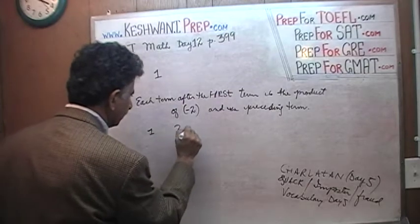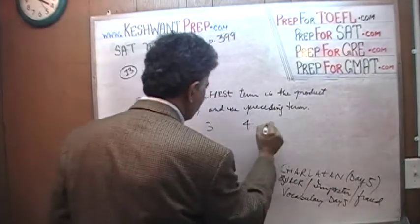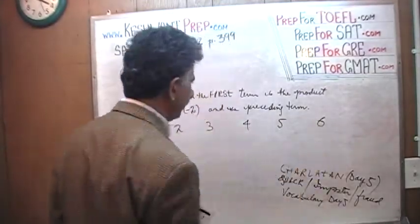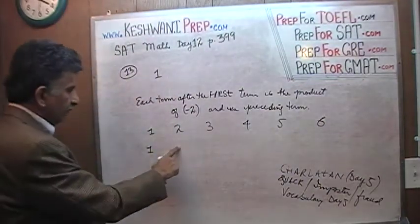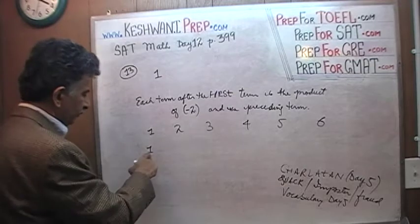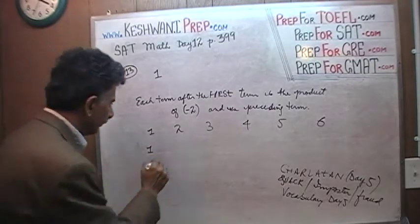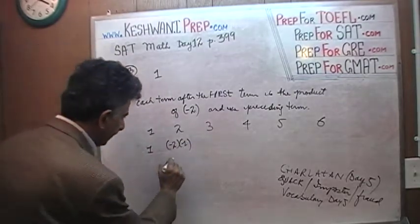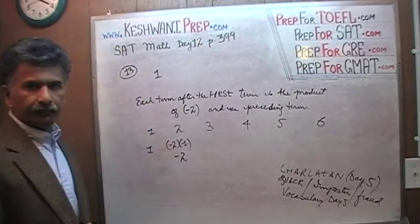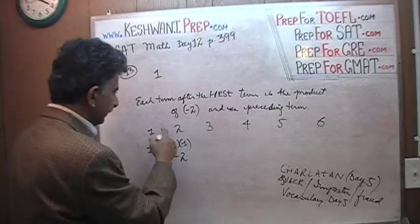Let's label them. 1, 2, 3, 4, 5 and 6. We will figure it out. The first term is 1. The next term is negative 2 times the preceding term, the term that came before it. So it is negative 2 times 1, which is negative 2. This is the third term.